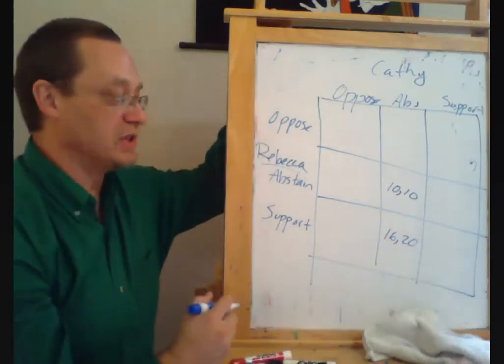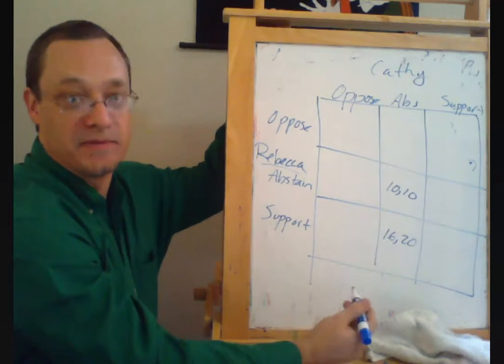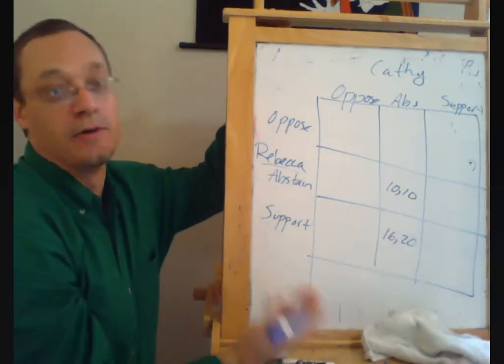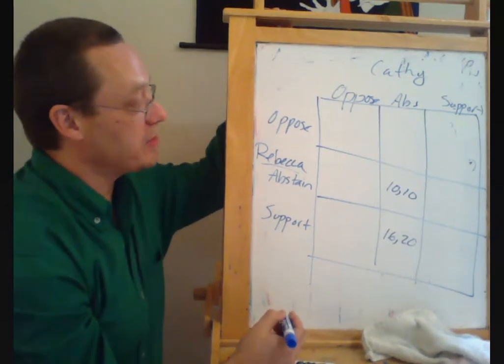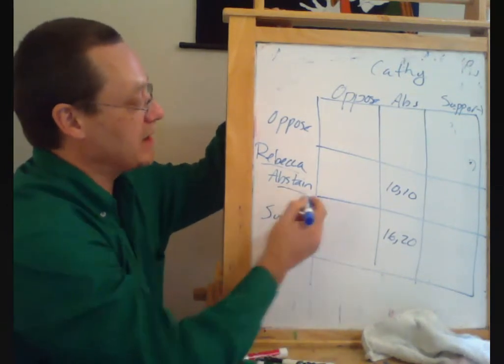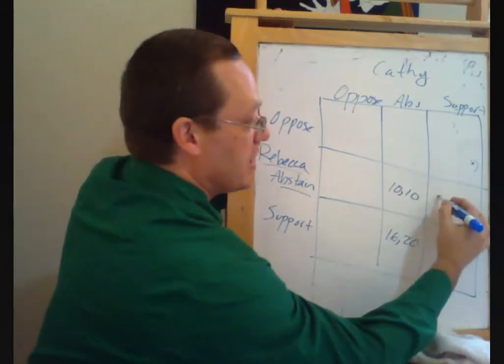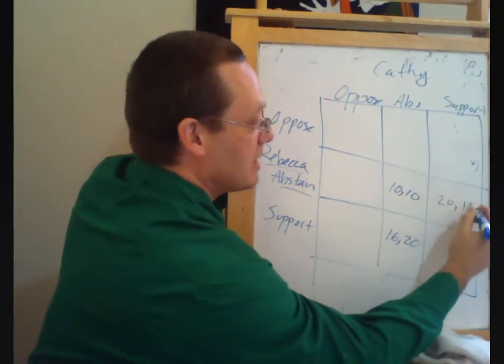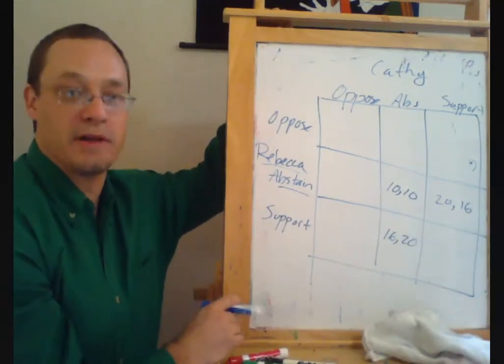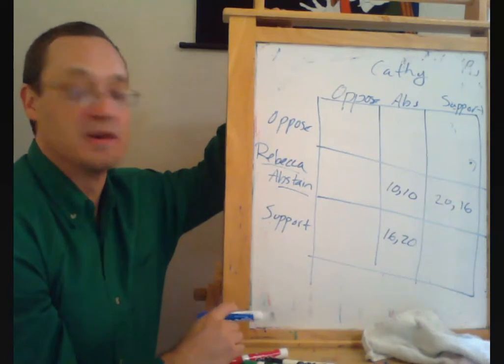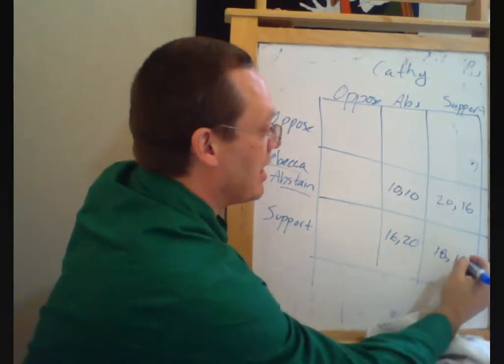I'm going to say that if Rebecca supports it but Kathy abstains, then Rebecca has to pay all the taxes to support it, and Kathy doesn't pay anything. And they're both better off though. That produces six benefits for Rebecca, net of the tax, and 10 benefits for Kathy who gets the benefits of the public good but pays none of the tax. The other way around, if Rebecca abstains and Kathy supports, then Rebecca gets benefits of 20, Kathy gets benefits of 16. And if they both support it, then they both split the tax burden equally, and they both get a payoff of 18.